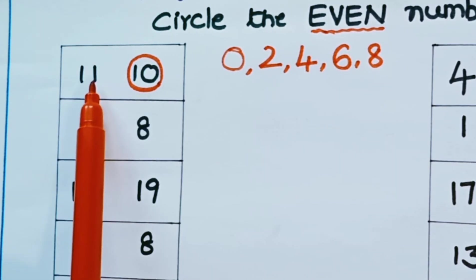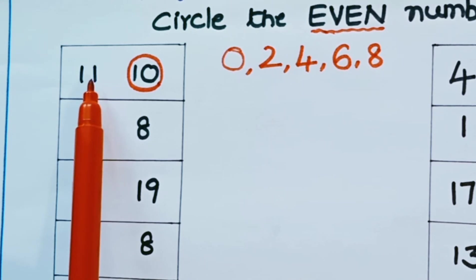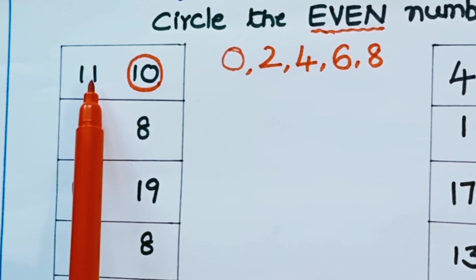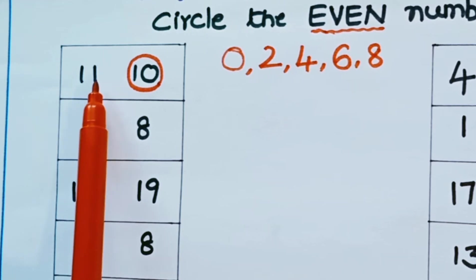And 11 — 11 is ending with the number 1. 1 is an odd number. So we should not circle 11.